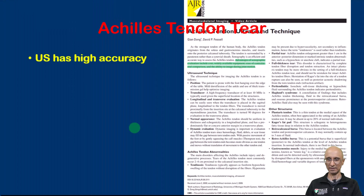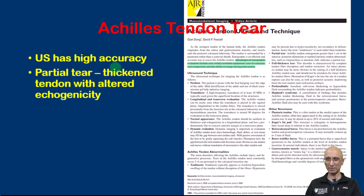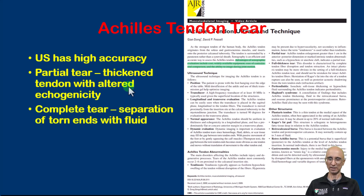Ultrasound is widely available and has very high accuracy; sensitivity is close to 100%. In terms of ultrasound findings, a partial tear will show a thickened tendon with altered echogenicity, while a complete tear will show separation of the torn ends of the tendon with fluid and hemorrhage in the defect.